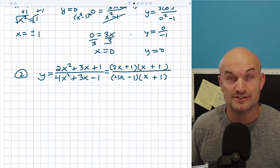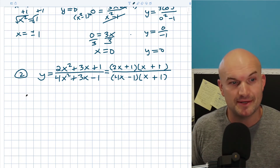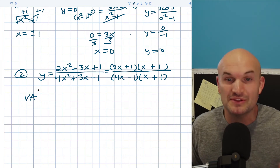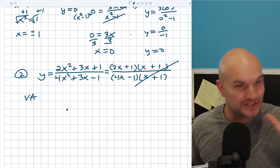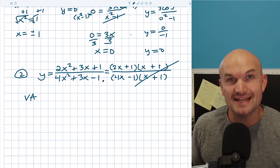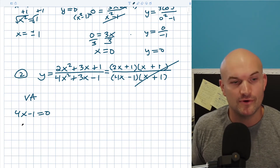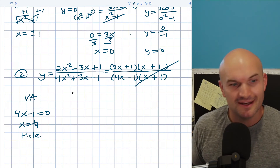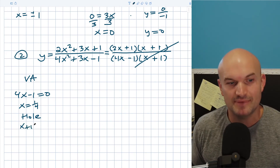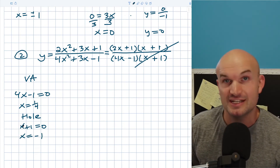Now with the factored form, I notice the (x plus 1) factors divide out between numerator and denominator. For vertical asymptotes, we set only the remaining denominator factor equal to 0 — these are our non-removable discontinuities. Setting 4x minus 1 equal to 0 gives x equals one-fourth as the vertical asymptote. The (x plus 1) that divided out represents a removable discontinuity — a hole in the graph at x equals negative 1.